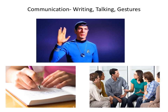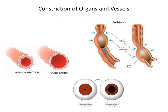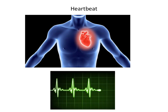The fifth function of the muscular system is involved with communication, such as writing, talking, and making gestures. The next function is the constriction of organs and vessels. Recall from a previous slide that smooth muscle makes up the inner layer of vessels and passageways. And finally, the last function of muscle tissue is involved with heartbeat. Because your heart is made up of cardiac muscle, when it contracts, the heart pumps blood.